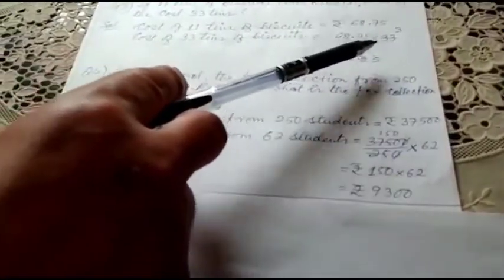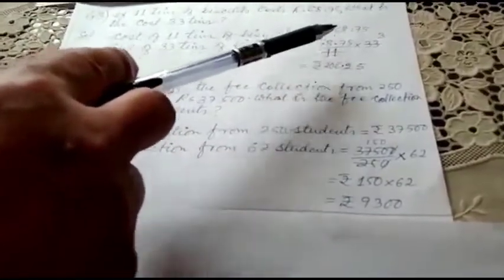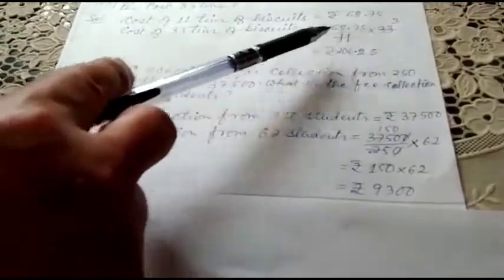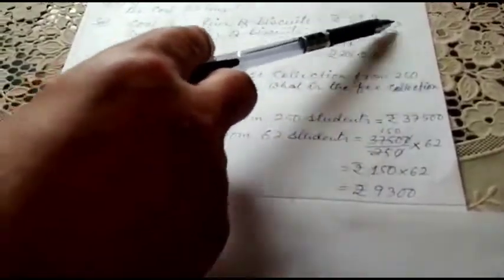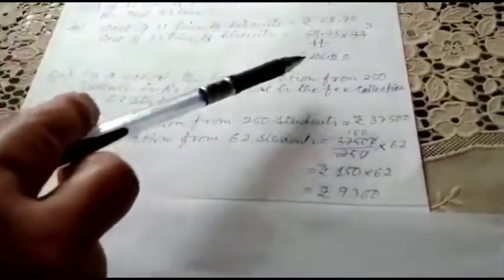Now I am finding the value for 33 units, 33 tins of biscuits. So 68.75 divided by 11 for one tin, into 33 tins. I cancel 11: 11 threes are 33. Now 68.75 into 3 is 206.25. Children, reference the explanation of this chapter. Homework: Show that 16, 84, and 441 are in proportion.